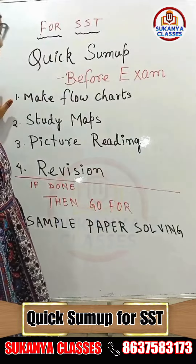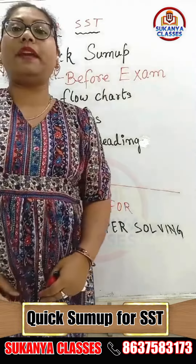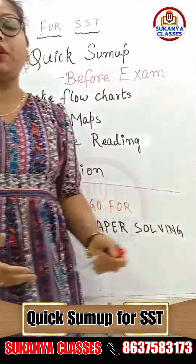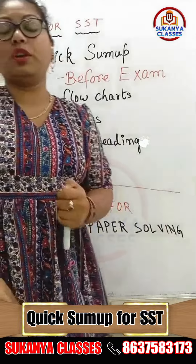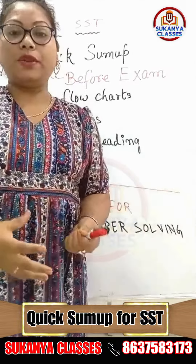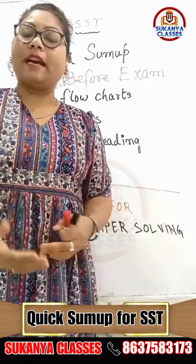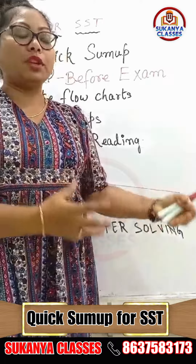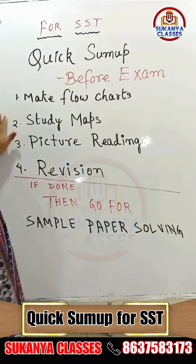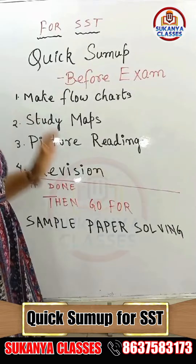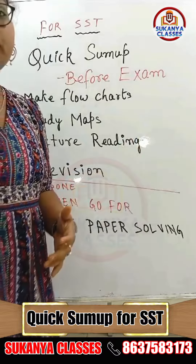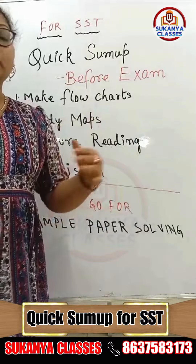First, let us make a flow chart based on the concept of the chapter — whatever chapter you are taking. Since we are taking the chapter from Geography, Resource and Development, let's take the soil part. Note the characteristics, make a flow chart out of it, and at the same time study the map — from which area we get a kind of soil, and what the characteristics of that particular soil are.